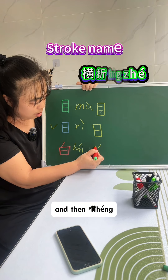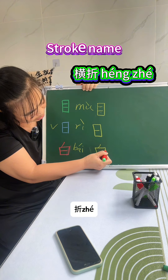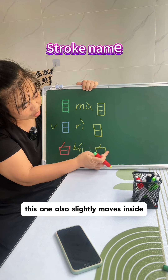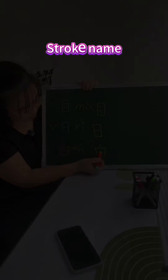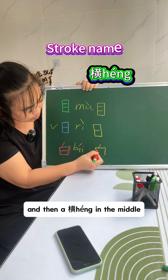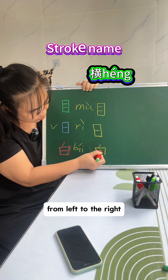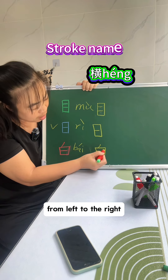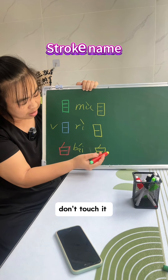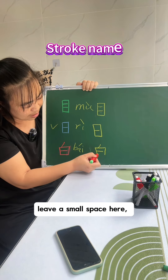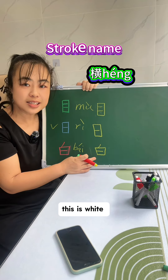And then 横, 折 — this one also slightly moves inside. And then 横 in the middle, from the middle move to the right, from left to the right. 横, 横 — don't touch the right stroke. Leave a small space here. And then 横, 横 — this is 白, white.